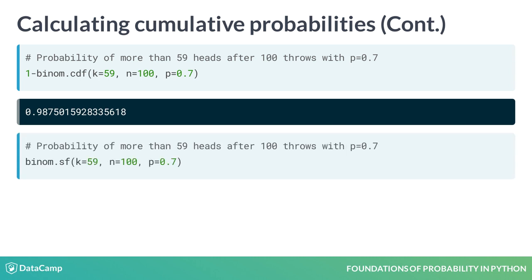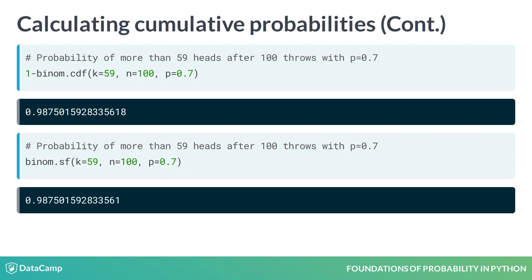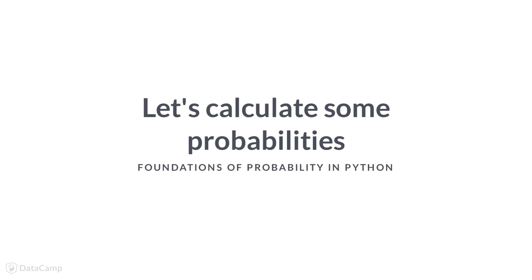Alternatively, we can calculate the complement using the function binom.sf with the same parameters. SF stands for survival function, which allows you to get tail probabilities, or the complement in this case. We've had some fun calculating probabilities — now let's practice.